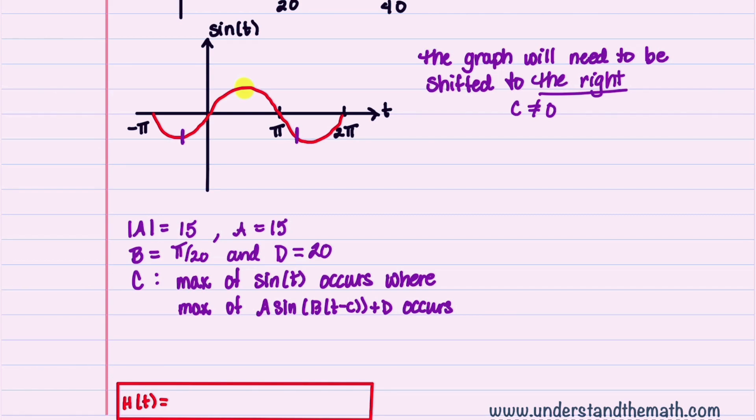To find C, we make a note that the max of sine t occurs where t is equal to π over 2. Likewise, our max of A times sine B times t minus C plus D is going to occur where B times t minus C is equal to π over 2, and t is equal to 20.